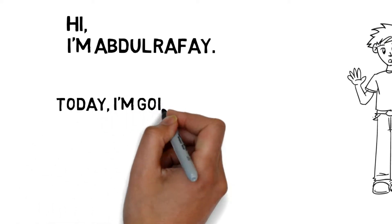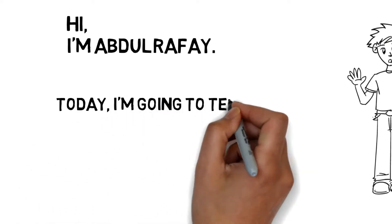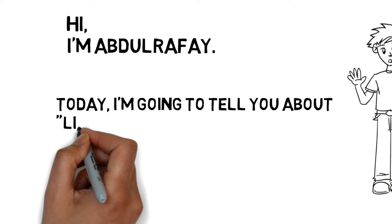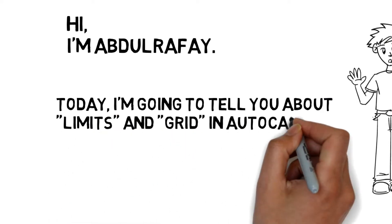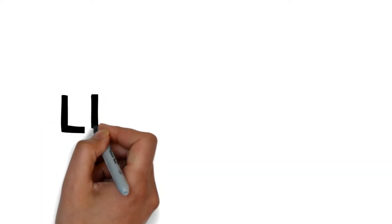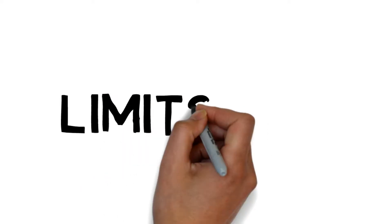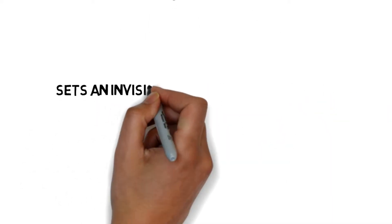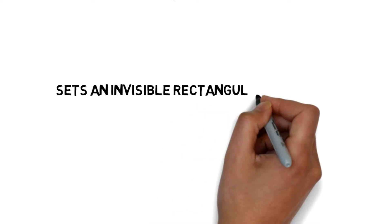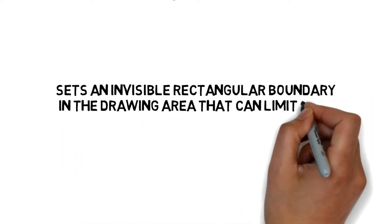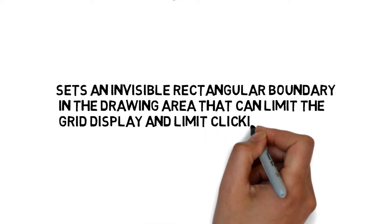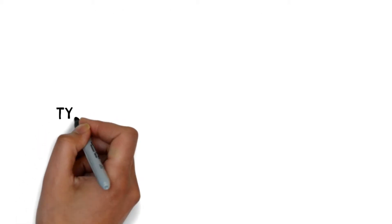Today I am going to tell you about limits and grid in AutoCAD. First of all, we discuss about limits. Its short form is LIM. It sets an invisible rectangle boundary in the drawing area that can limit the grid display and limit clicking or entry point location.